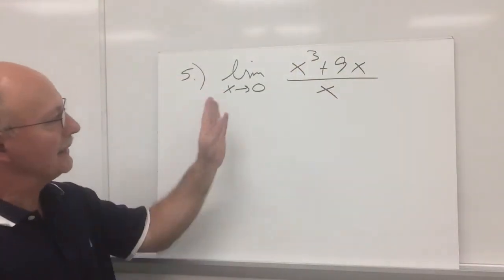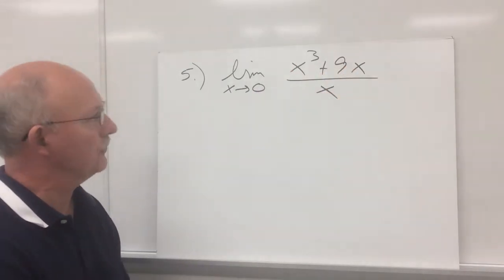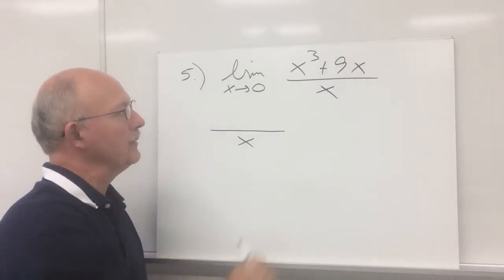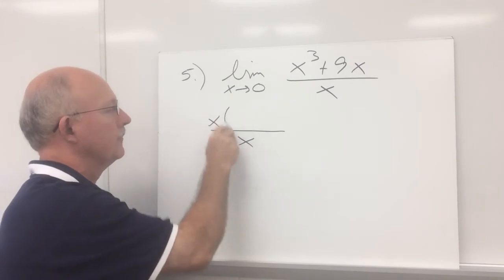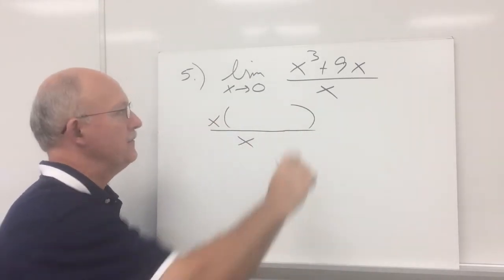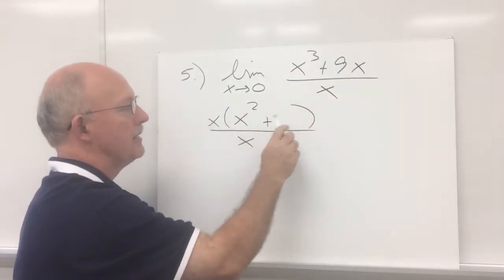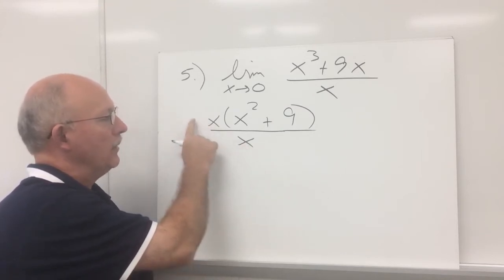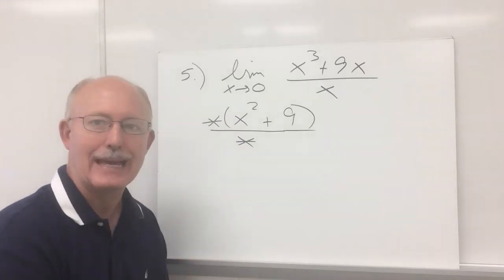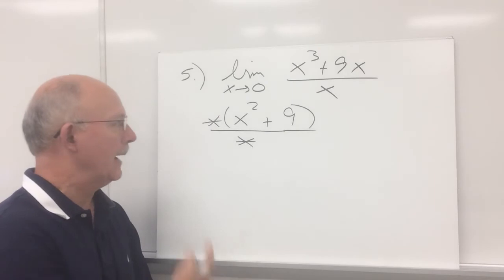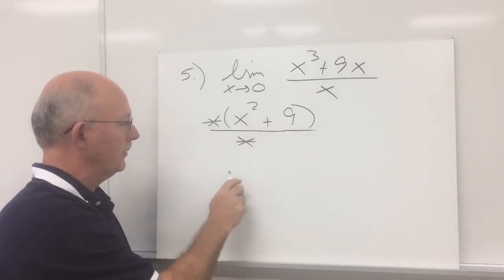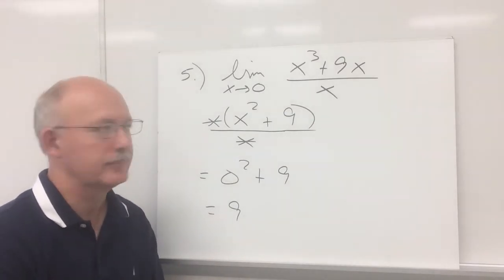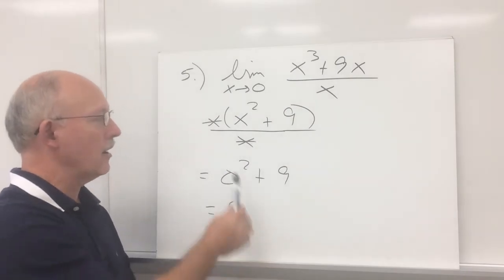Example number five: the limit as x approaches zero of x cubed plus nine x over x. The x in the denominator won't factor — bring it down. In the numerator, x cubed plus nine x has a common factor of x. Factoring x off gives x times the quantity x squared plus nine. The x outside the parentheses cancels with the x in the denominator — that's the hole. Substituting zero in for x: zero squared plus nine equals nine. So the limit as x approaches zero is nine.